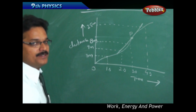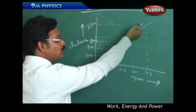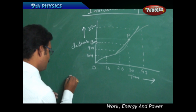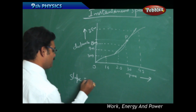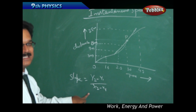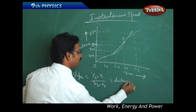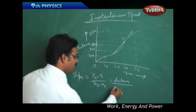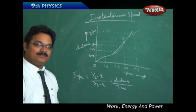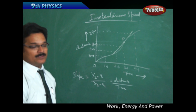Whenever a graph-based question asks you to find instantaneous speed, you have to draw a tangent from that point. After drawing the tangent, you take the slope of that tangent. In mathematics, slope is y2 minus y1 divided by x2 minus x1, which means change in y-axis over change in x-axis. Your y-axis is distance and your x-axis is time, so distance divided by time is nothing but speed.